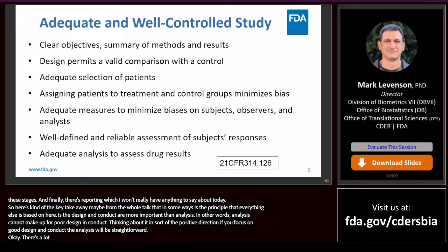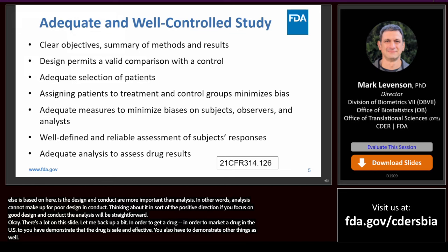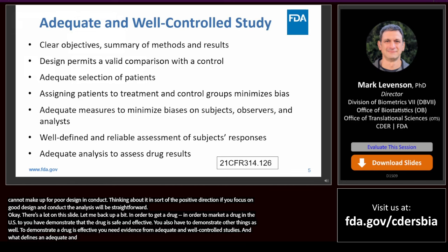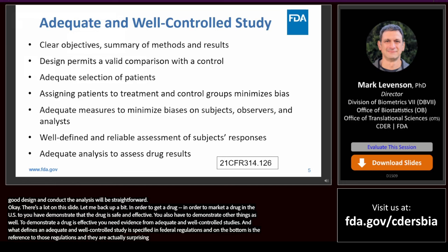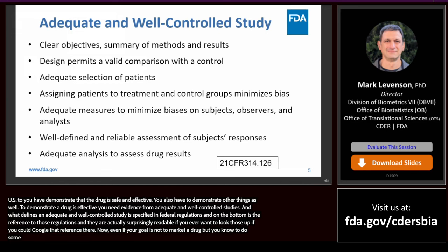In order to market a drug in the US, you have to demonstrate that the drug is safe and effective. To demonstrate a drug is effective, you need evidence from adequate and well-controlled studies. What defines an adequate and well-controlled study is specified in federal regulations. These principles are good scientific principles regardless of whether your goal is regulatory approval. Key elements include: clear objectives and summary of methods and results; a design that permits a valid comparison with the control; adequate selection of patients who have the condition you're interested in; assigning patients to treatment and control groups to minimize bias, where randomization comes in; adequate measures to minimize bias on subjects, observers, and analysts, which is mainly about blinding; well-defined and reliable assessment of subjects' responses; and adequate analyses to assess drug results.